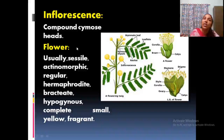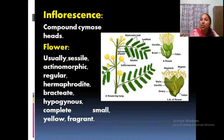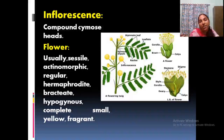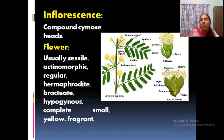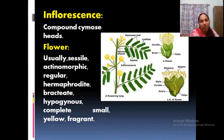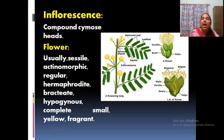Flowers are usually sessile — no stalk — present in the inflorescence. They are actinomorphic. Compare with Fabaceae and Cesalpinaceae: there the flowers are zygomorphic, but in Mimosaceae flowers are actinomorphic. So you have to compare the subfamilies — Fabaceae and Cesalpinaceae are zygomorphic, but in Mimosaceae it is actinomorphic.